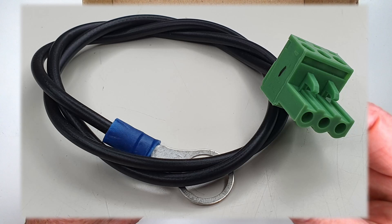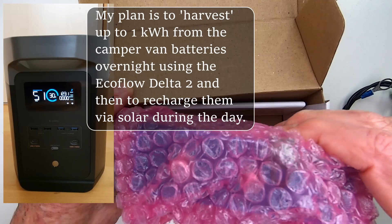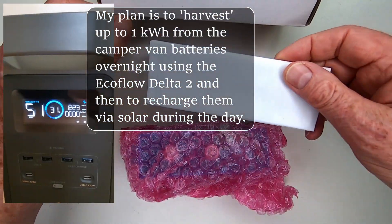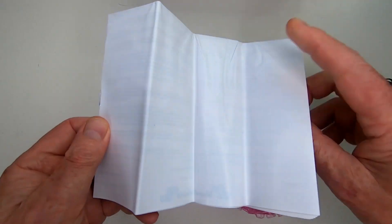However, as I'm about to experiment with harvesting energy from the batteries overnight for house use during the day whenever the camper is parked up, I wanted to make sure they never dropped below 50% state of charge, hence the purchase of the Victron Smart Battery Connect.